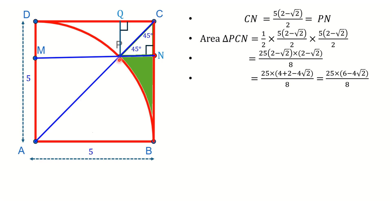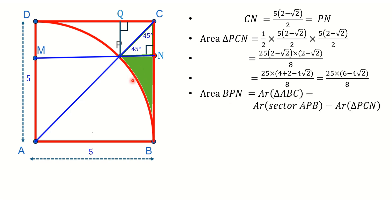We can also calculate the circular sector area — the quarter circle is one-fourth of a circle, and the relevant piece is one-eighth. The area of the green region BPN equals: area of triangle ABC minus area of sector APB minus area of triangle PCN.